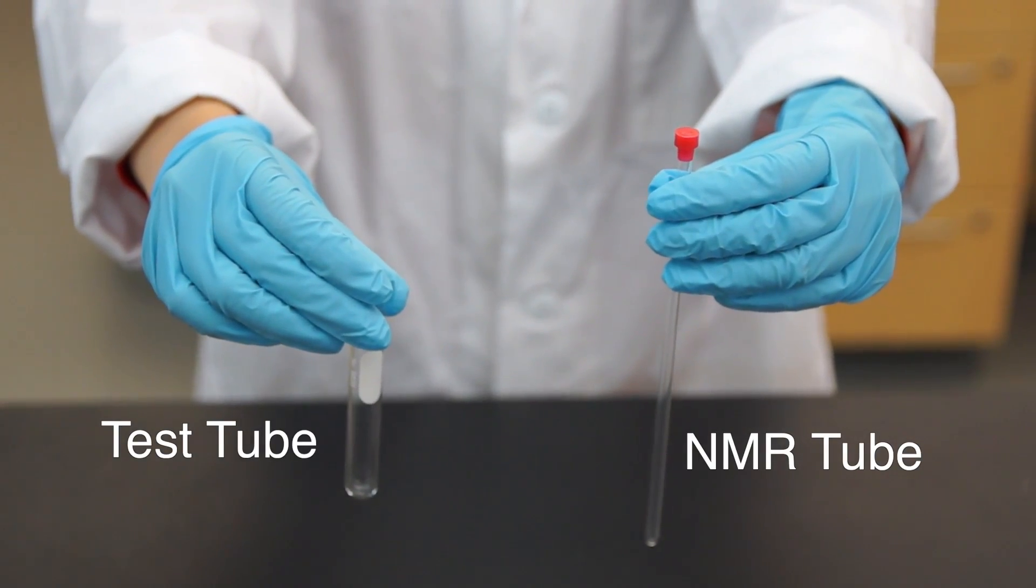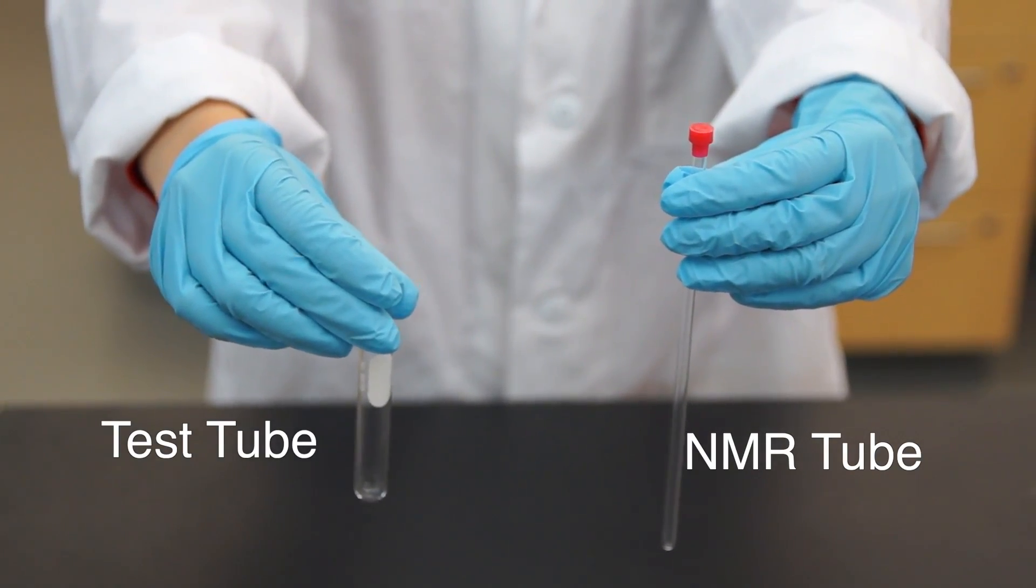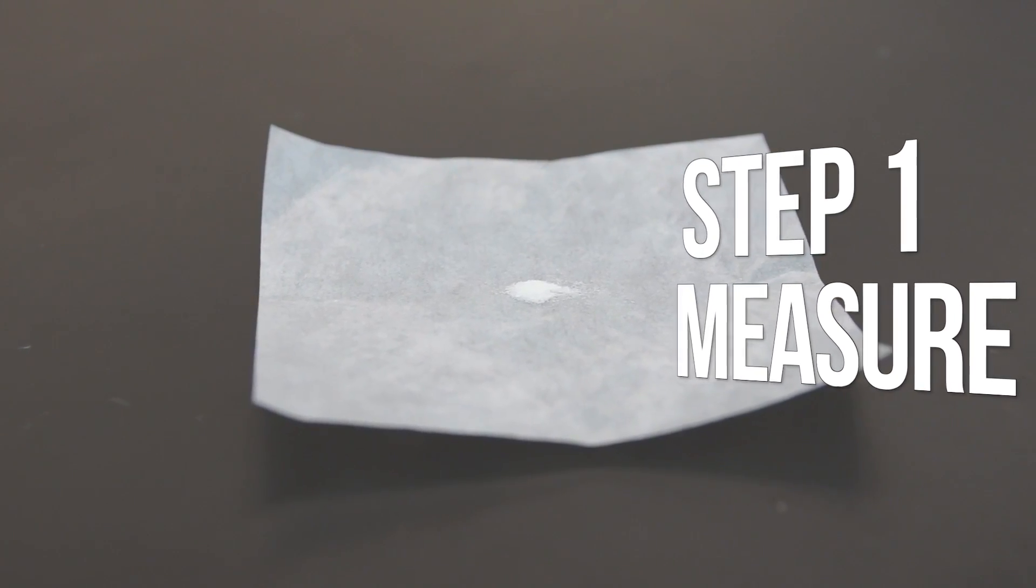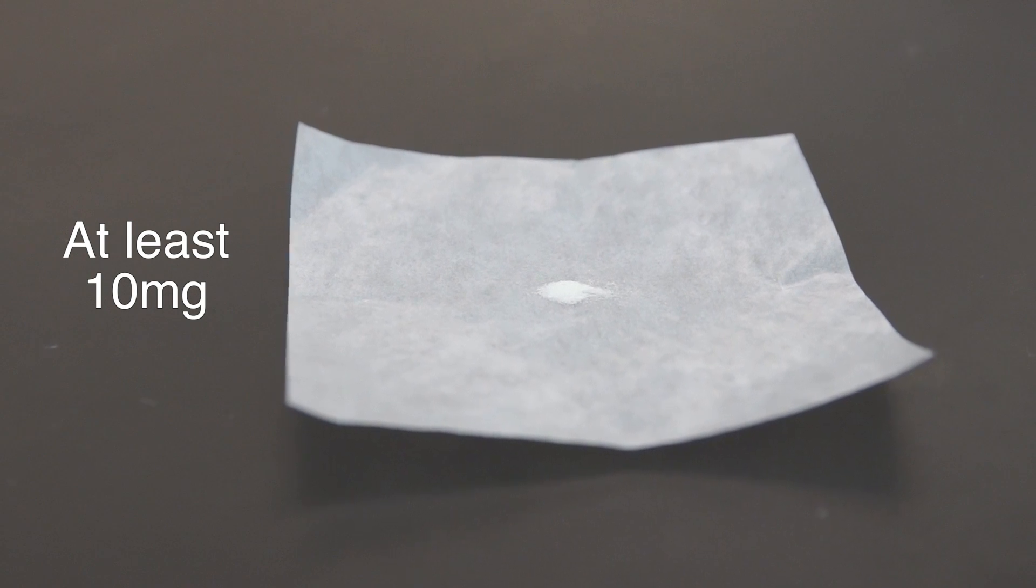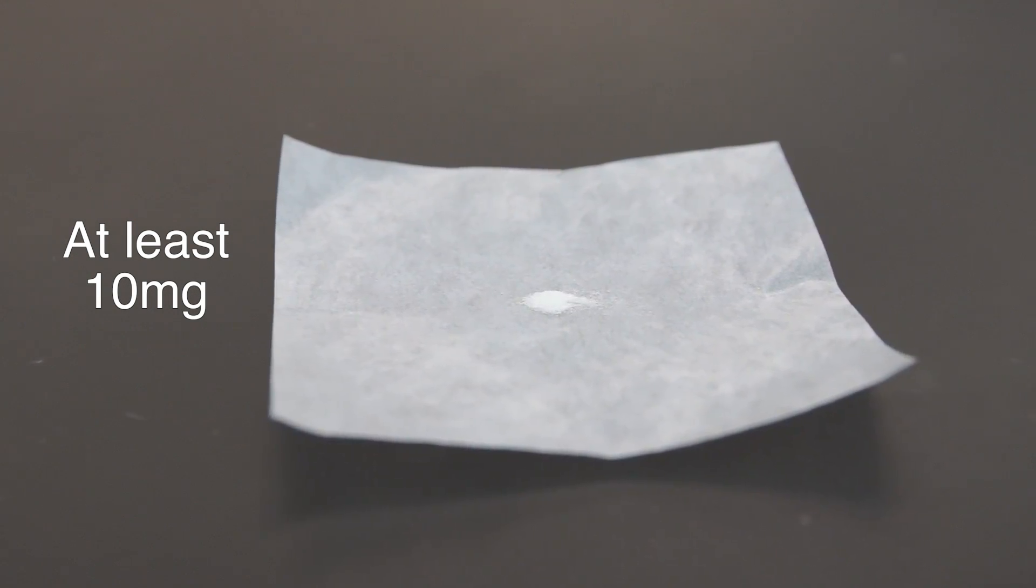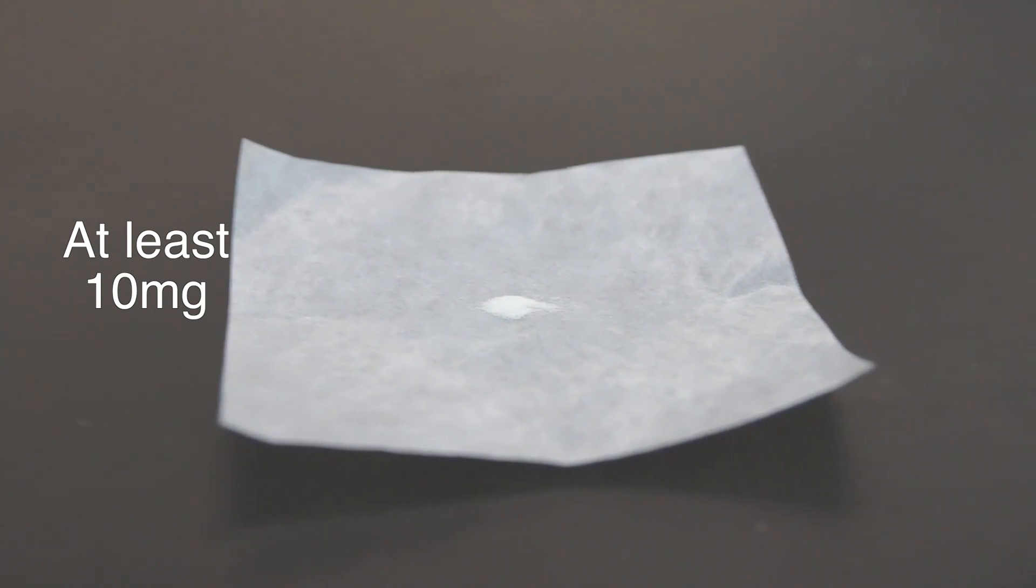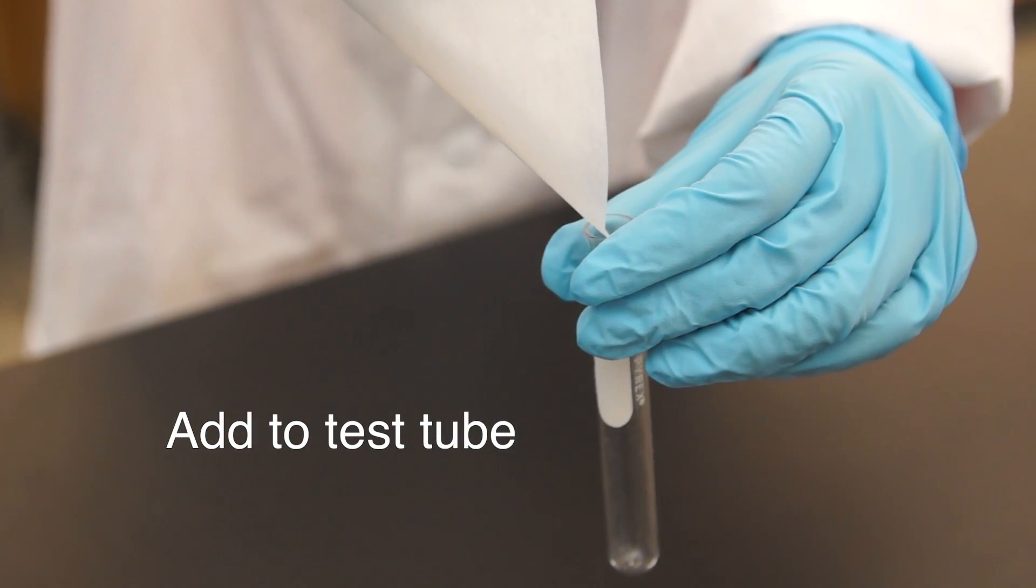Grab your test tube and NMR tube. First, measure out your sample. For proton NMR, you'll want at least 10 mg of sample. For carbon NMR, you might need up to 50 mg of sample. Now, add your sample to a test tube.